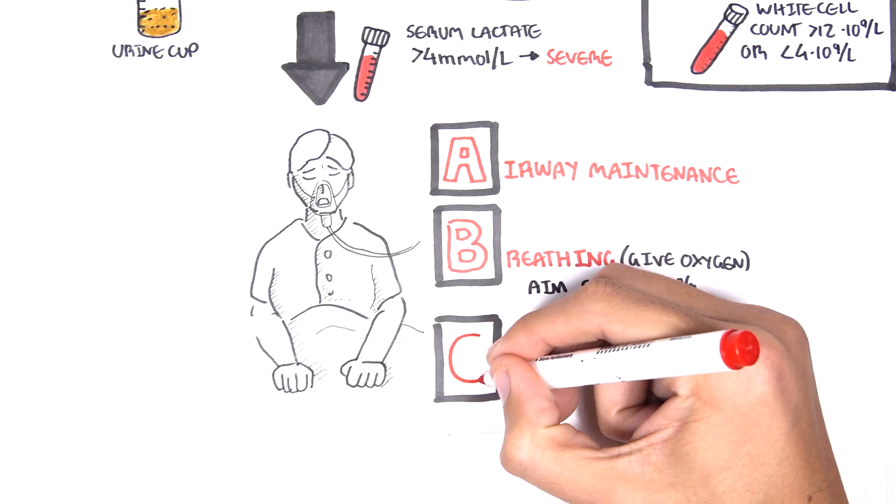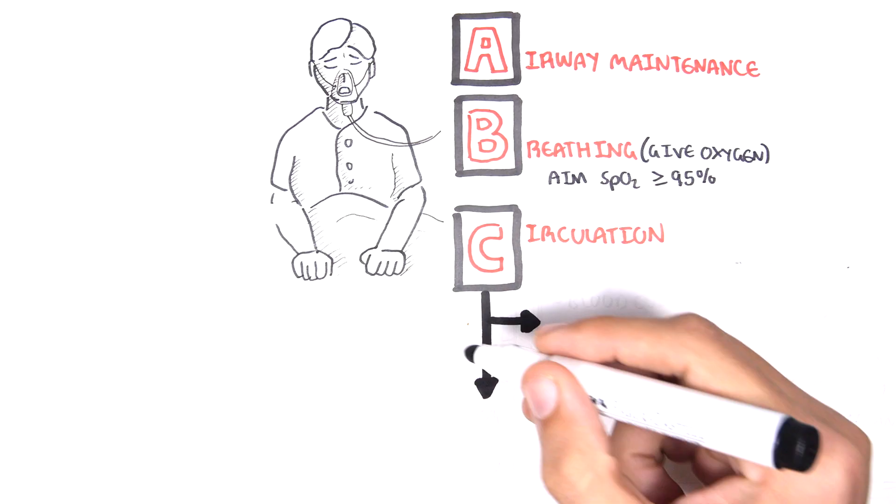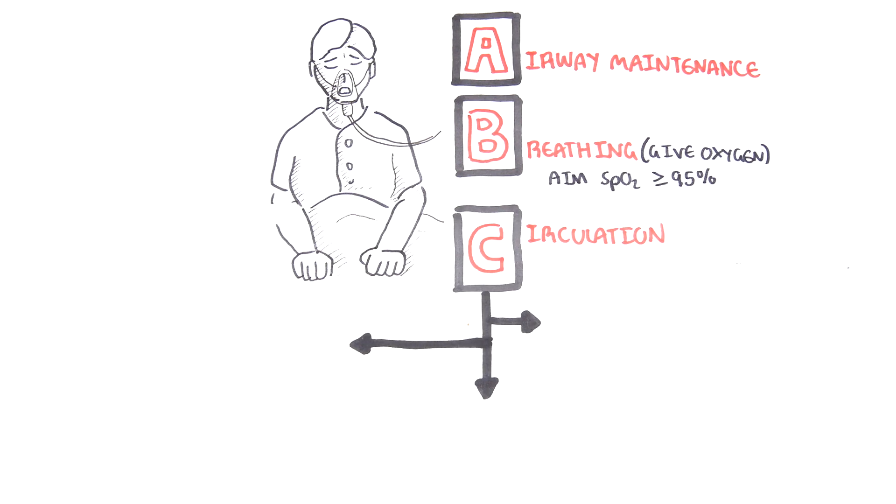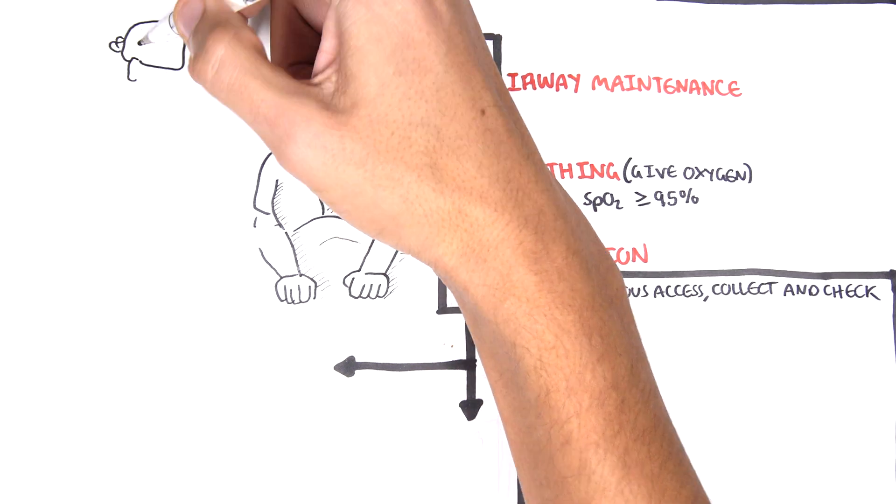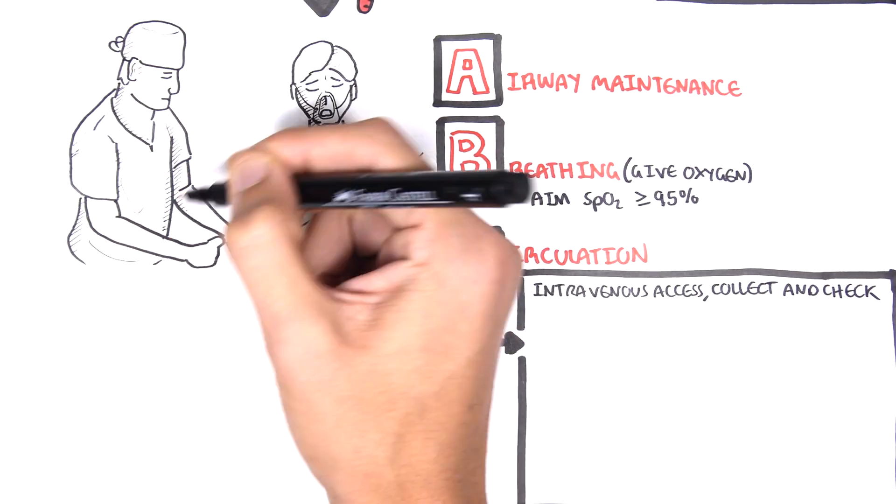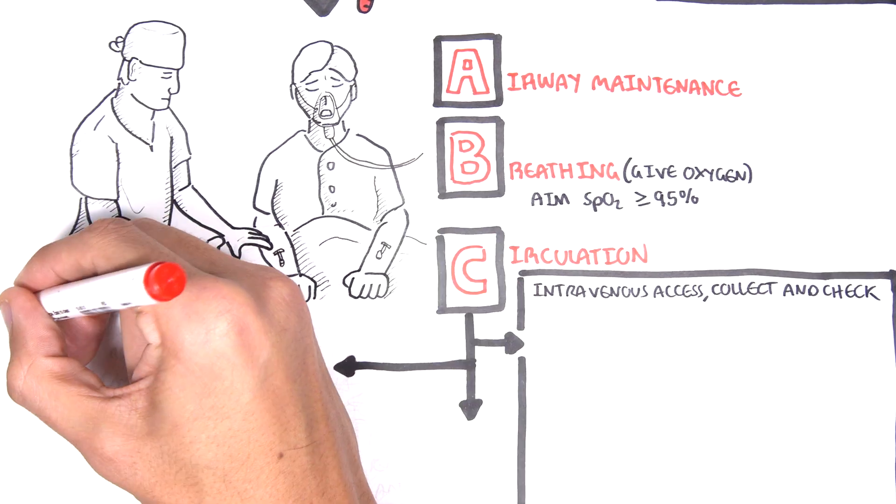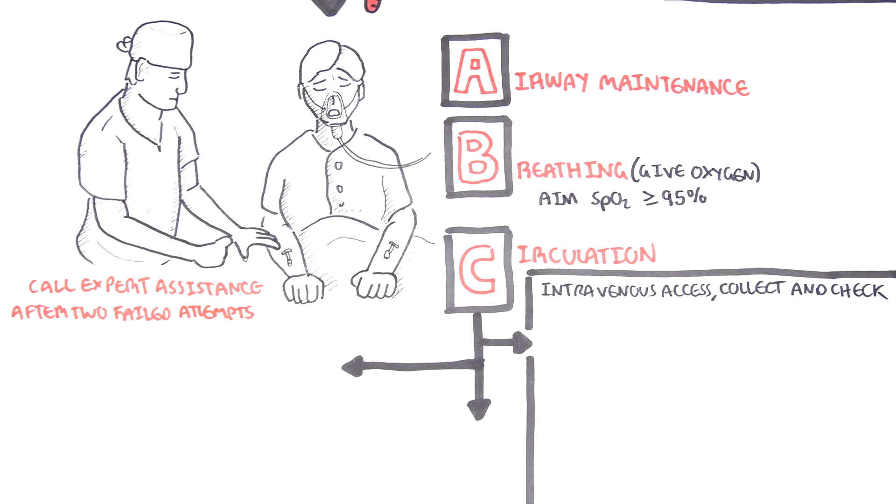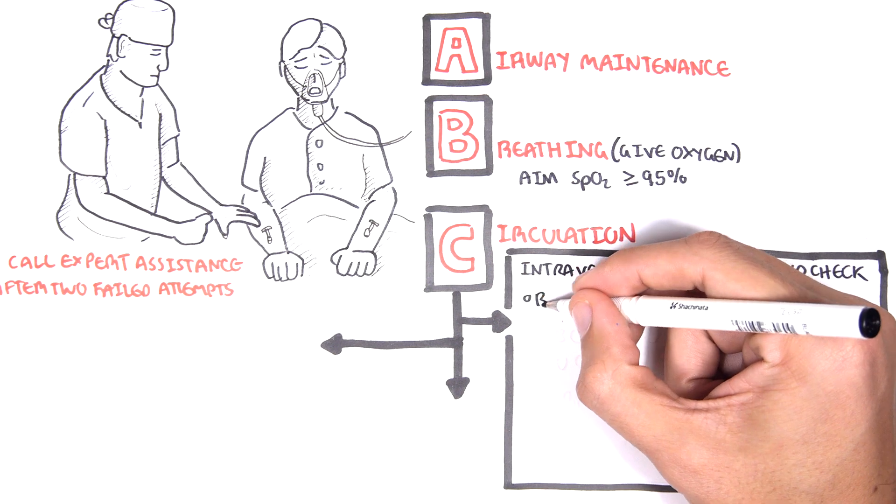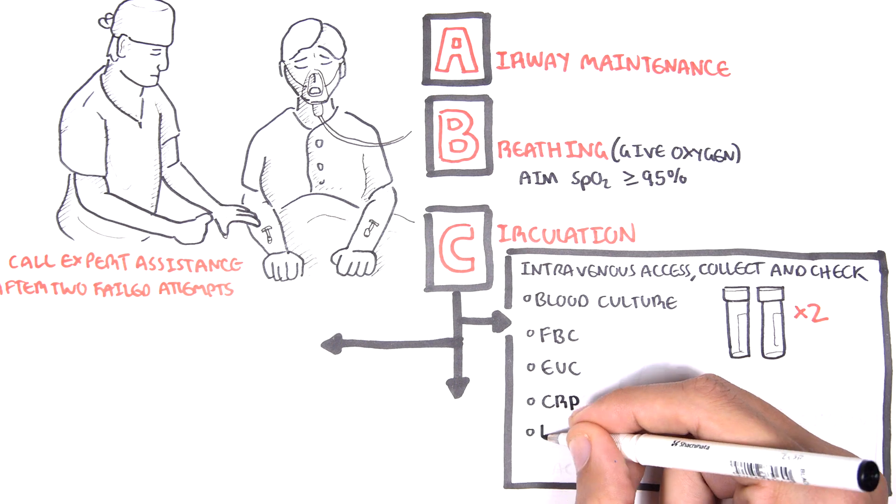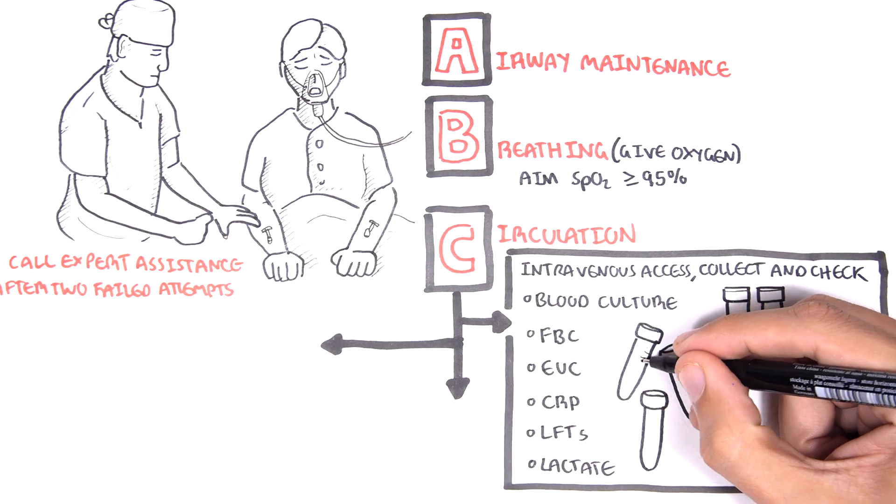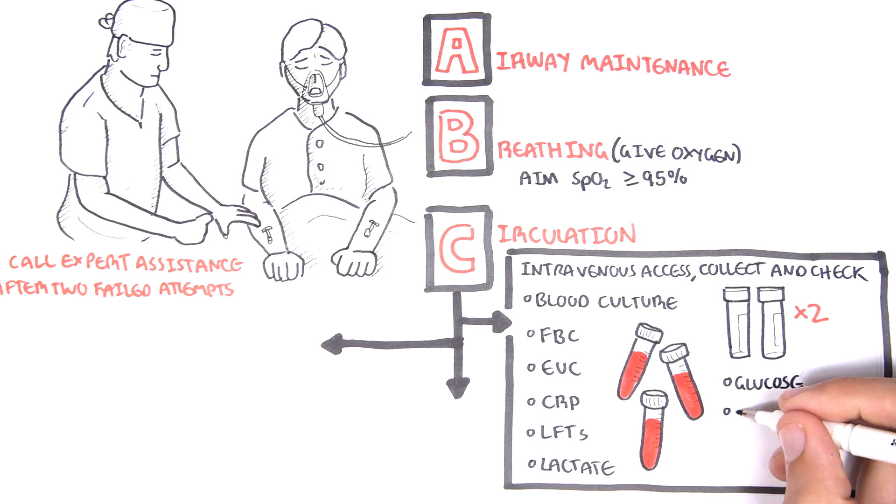C is for circulation, and circulation involves three things. Number one, get IV access. Collect bloods and also check the bloods. If IV access cannot be obtained, call expert assistance, usually after two failed attempts. Bloods to collect include bloods for culture. Blood for culture should be done twice and collected from at least two different sites. Other blood tests include full blood count, EUC, CRP, LFT, glucose, and procalcitonin.